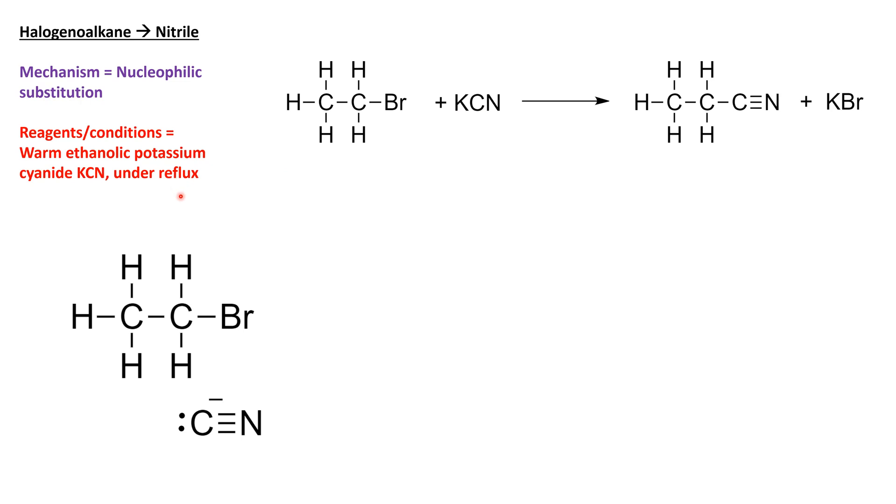Let's have a look at our mechanism. This time we've got the cyanide nucleophile. We've got a delta positive carbon, delta negative bromine, and therefore our nucleophile is going to be attracted to that delta positive carbon, forming a bond with it. We're going to break this bond and substitute that bromide for the nitrile group.